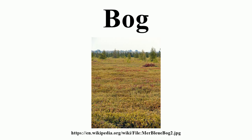Bogs occur where the water at the ground surface is acidic and low in nutrients. In some cases, the water is derived entirely from precipitation, in which case they are termed ombrotrophic. Water flowing out of bogs has a characteristic brown color, which comes from dissolved peat tannins. In general, the low fertility and cool climate results in relatively slow plant growth, but decay is even slower owing to the saturated soil. Hence peat accumulates.